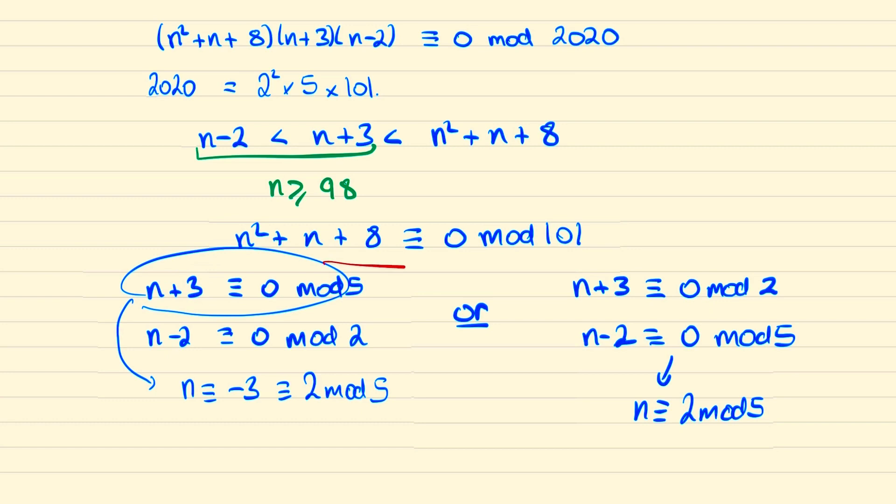And thus we're saying that if this is true then in either case we end up with n being a multiple of 5 plus 2.